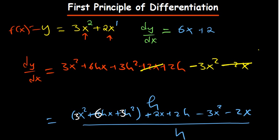And then the negative 3x squared is able to subtract that as well. And then we are dividing by h which is on the bottom.